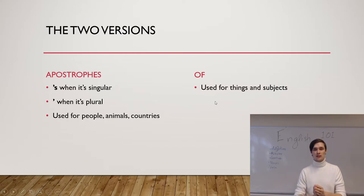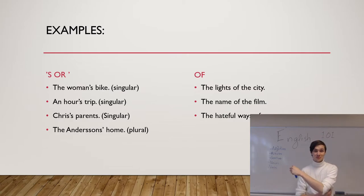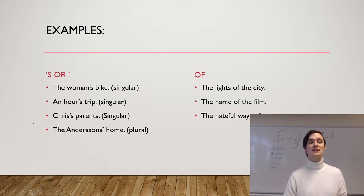The word 'of' is used for things and subjects. Let's look at examples. On this side we have the apostrophe S. First example: the woman's bike - that's singular, it's one woman and it's her bike, so we have apostrophe S. An hour's trip - singular, apostrophe S. Then we have Chris's parents - singular. It's important because his name Chris ends with an S, then you say Chris's parents.